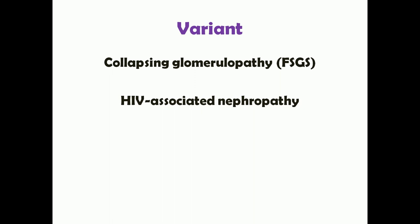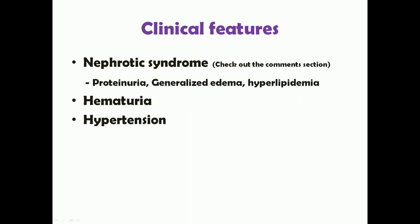The clinical features of focal segmental glomerulosclerosis can be nephrotic syndrome alone, or patients can present with nephrotic syndrome along with features of nephritic syndrome such as hematuria and hypertension. Nephrotic syndrome manifests as a triad of proteinuria, generalized edema (anasarca), and hyperlipidemia.